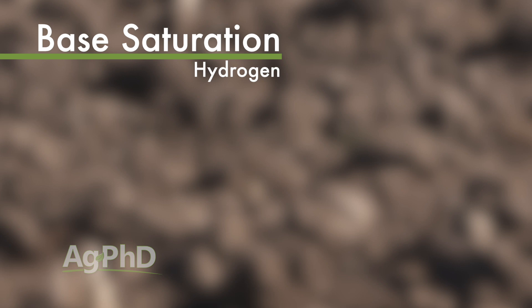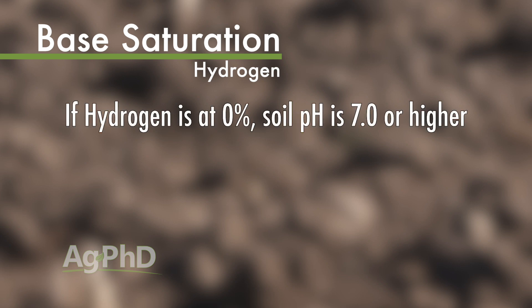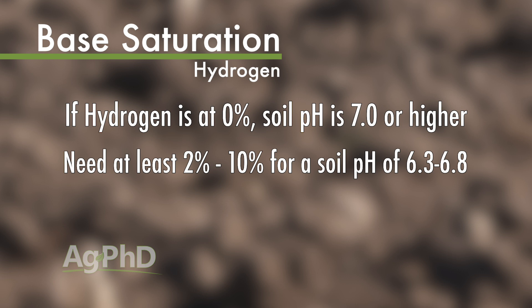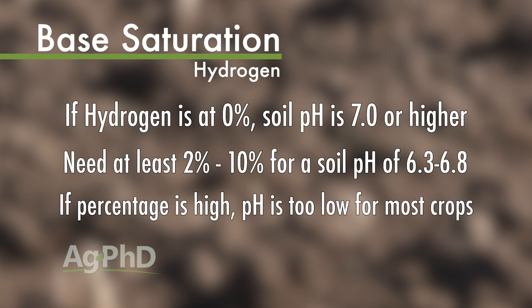The last three nutrients you don't need near as many of in your soil. Hydrogen is one that could be almost at zero. When your hydrogen hits zero, that means your soil pH is 7 or above. For most crops, 6.3 to 6.8 pH is ideal, so you should find your hydrogen in the range of about 2% to 10% if you're in that pH range. Remember, anything below 7 is an acid soil — that means you have hydrogen in it. If you see a very high hydrogen number, like 20%, that tells you your pH is too low for most crops.